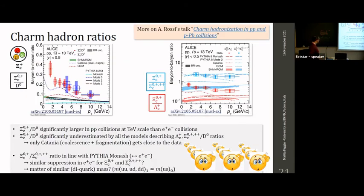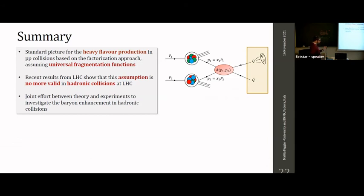Looking at the Sigma_c over D0 ratio, all the models that were nicely reproducing the Sigma_c measurement within uncertainty are now not able to capture its magnitude — only the Catania model gets closer. In conclusion, the standard picture for heavy flavor hadron production in proton-proton collisions based on a factorization approach with universal fragmentation functions is being challenged: recent measurements from the LHC experiments show this assumption may no longer be valid in hadronic collisions at the LHC.